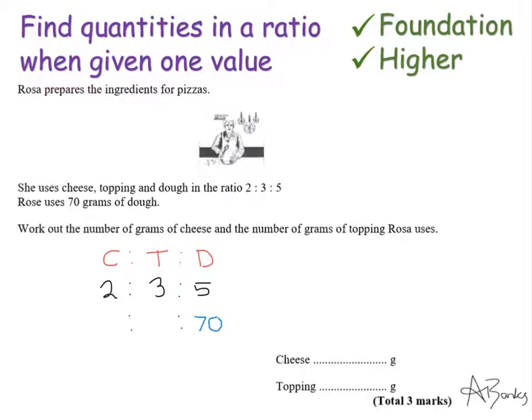And the question is asking me to figure out the other two missing numbers. Now to get from this 5 here to this 70, I am multiplying by 14. So if I multiply my other two numbers by 14, 2 times 14 is 28 and 3 times 14 is 42.